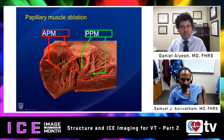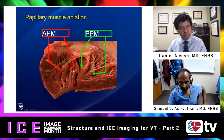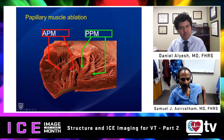One key area is the papillary muscles and the support apparatus for the mitral valve — a very complex, interdigitating structure where standard nomenclature on which papillary muscle is which can be very difficult. There are strands that could be chordal or Purkinje-like fibers that bridge the papillary muscles to the free wall, to each other, and to the septal components of the conduction system.